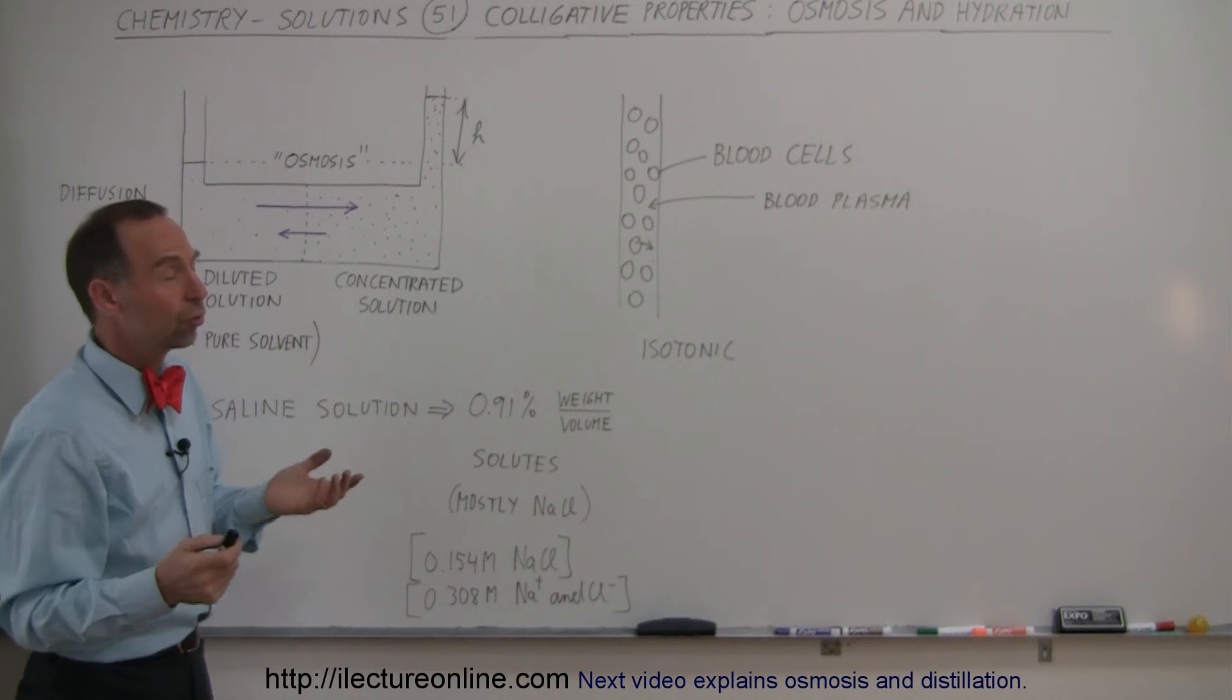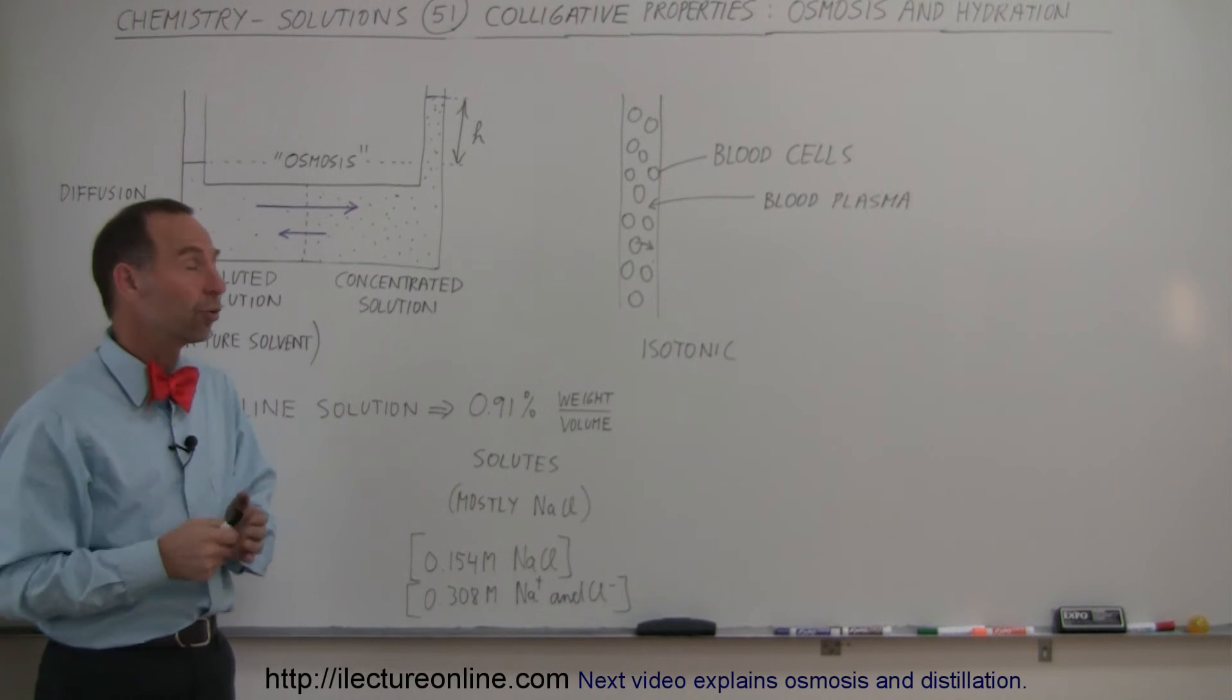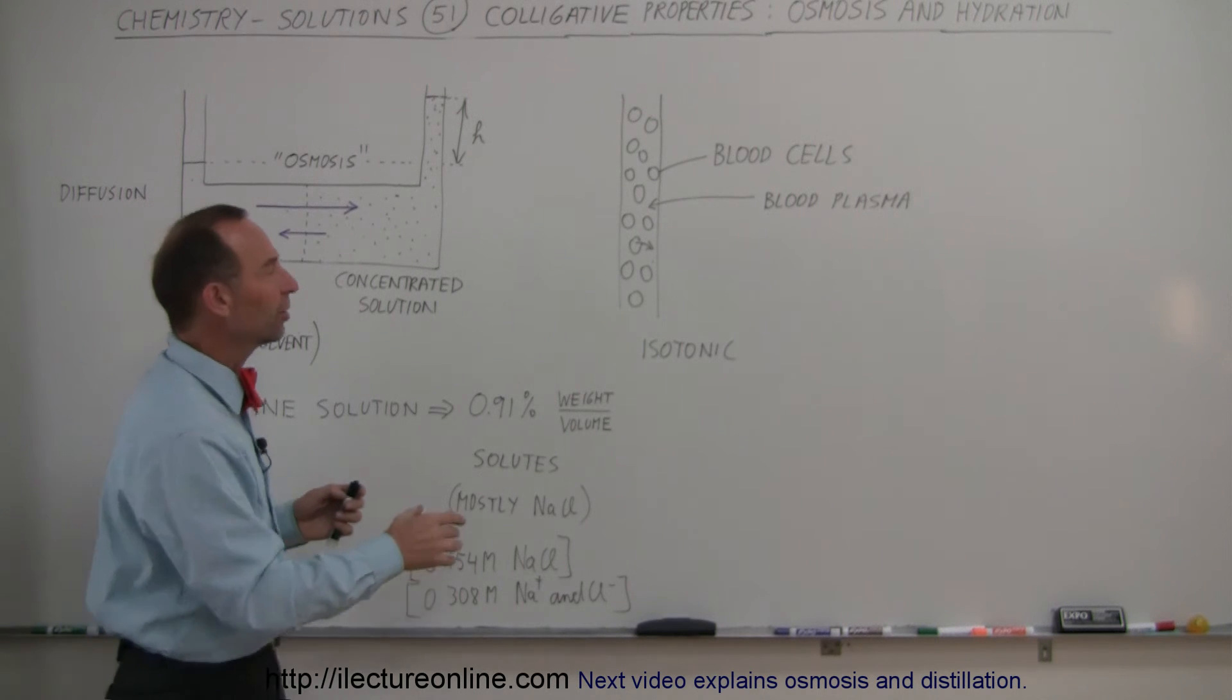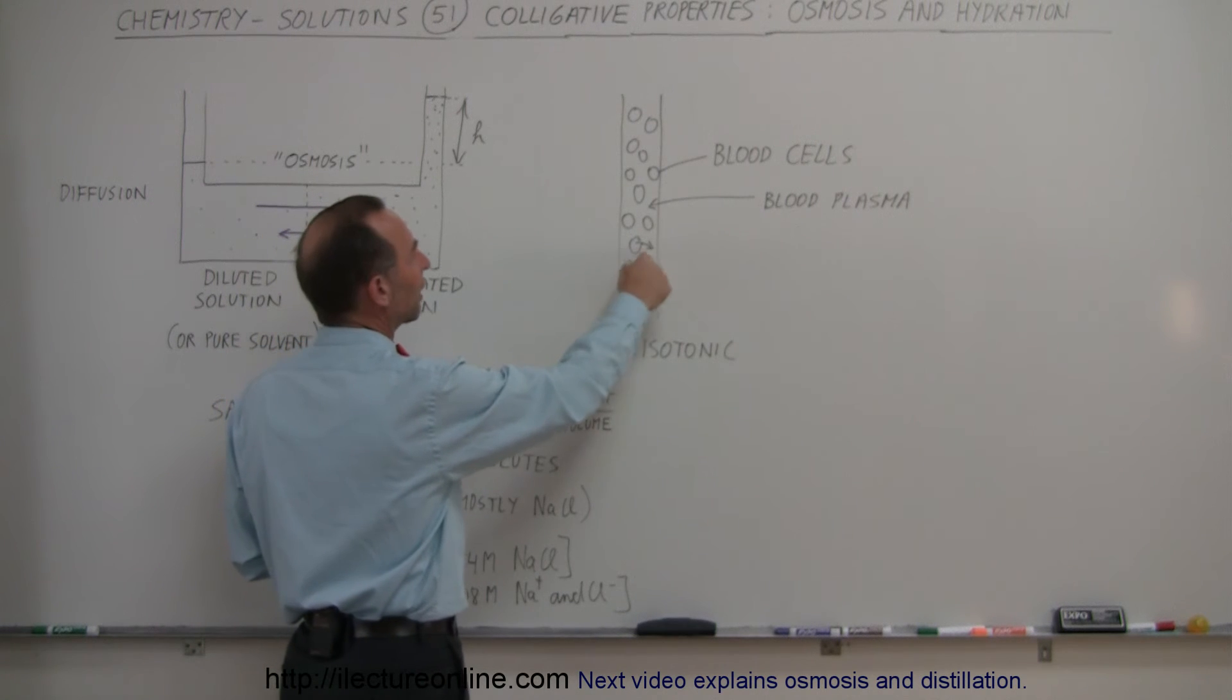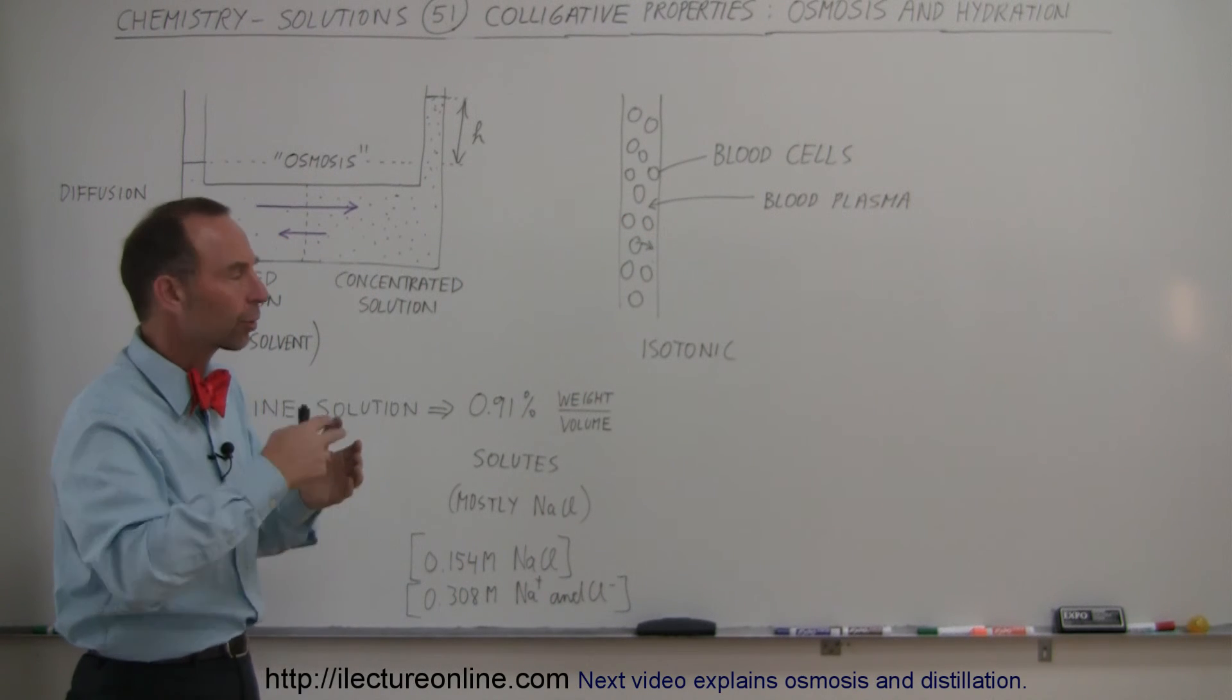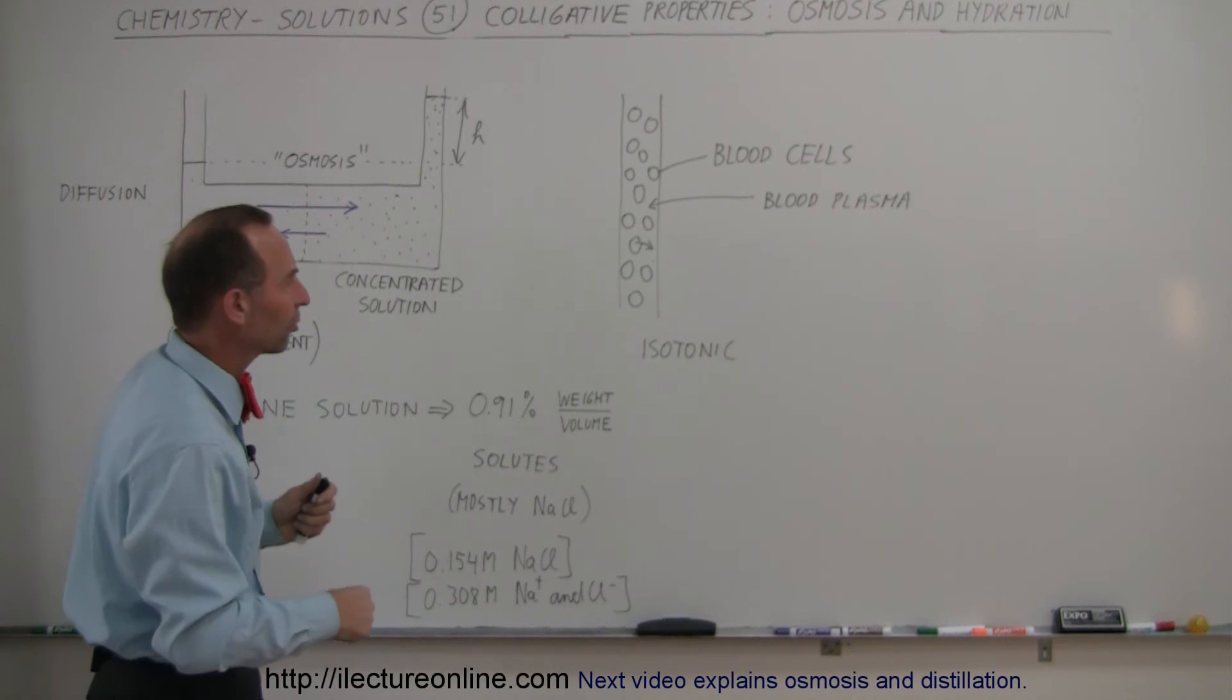The kidneys do a wonderful job in trying to control that as well. If there's too much salt in your body, the kidneys work hard to remove that salt. If the plasma becomes too highly concentrated, water will go from the blood cells into the plasma, and the kidneys work really hard to get that salt out of the bloodstream.